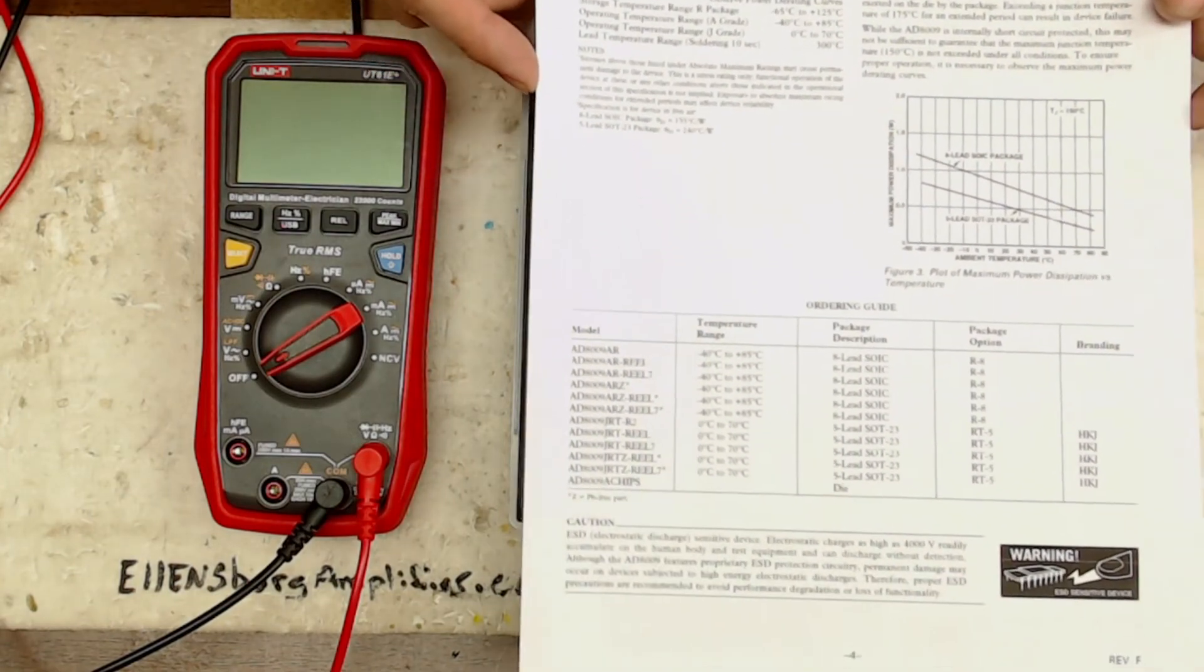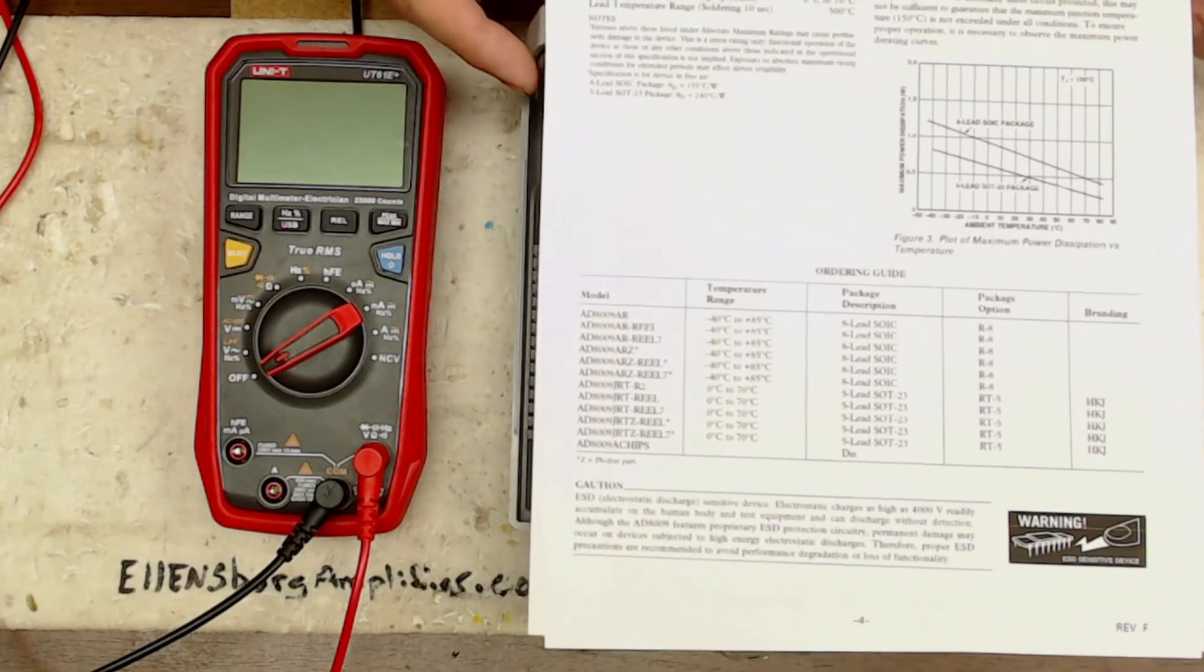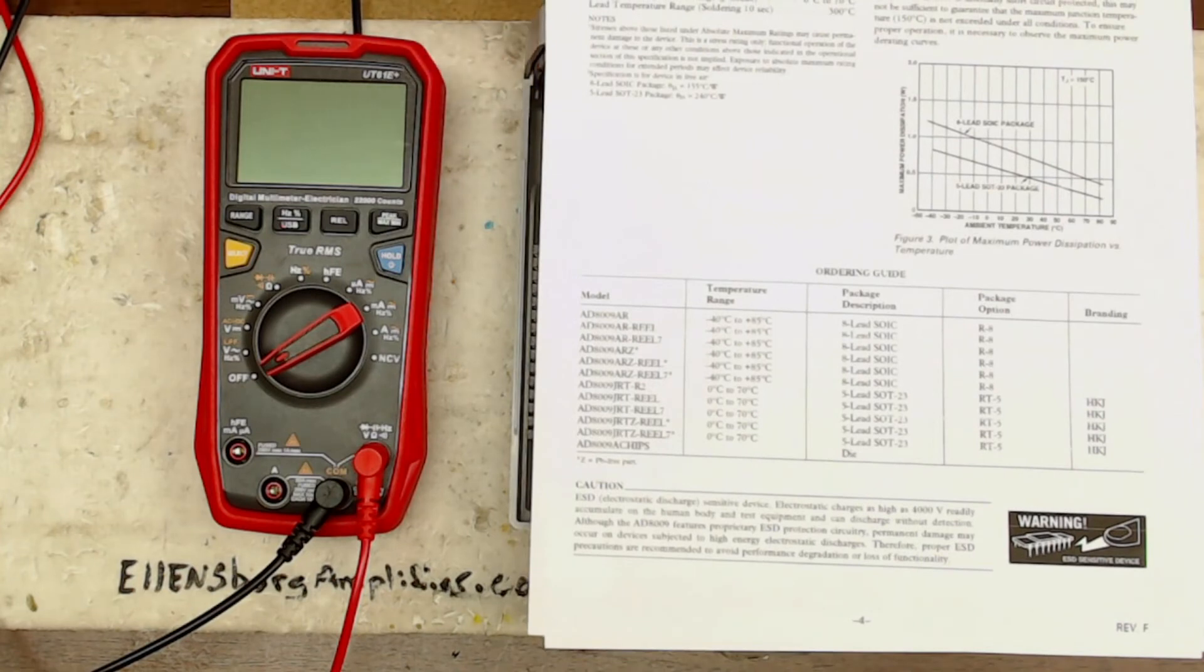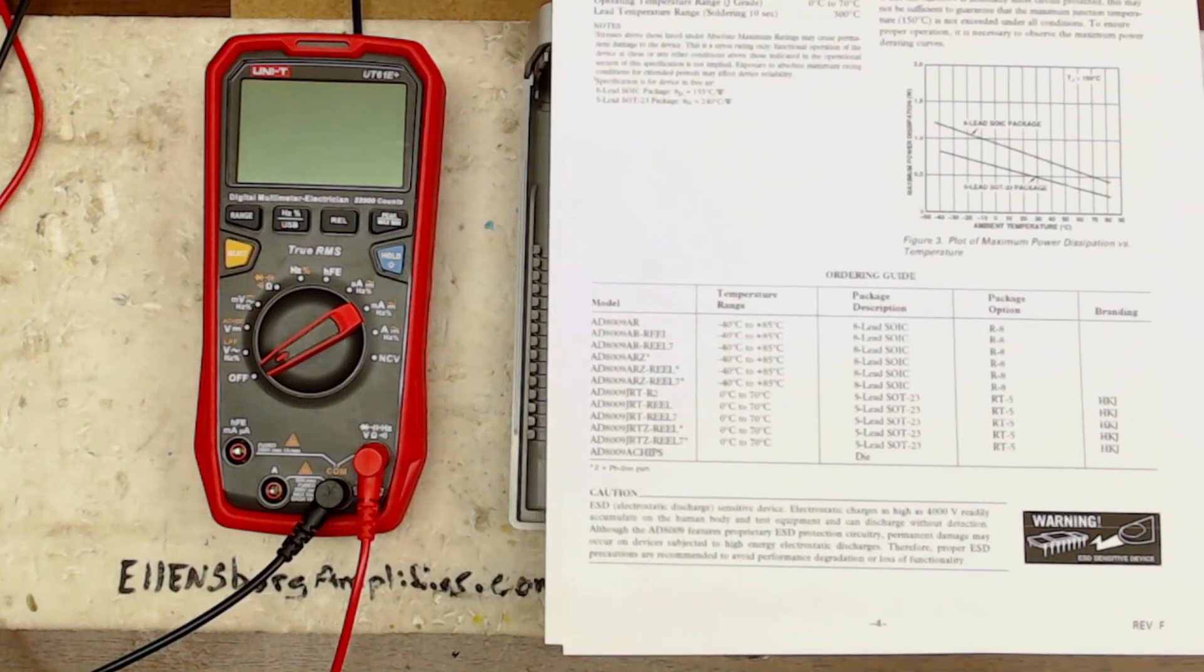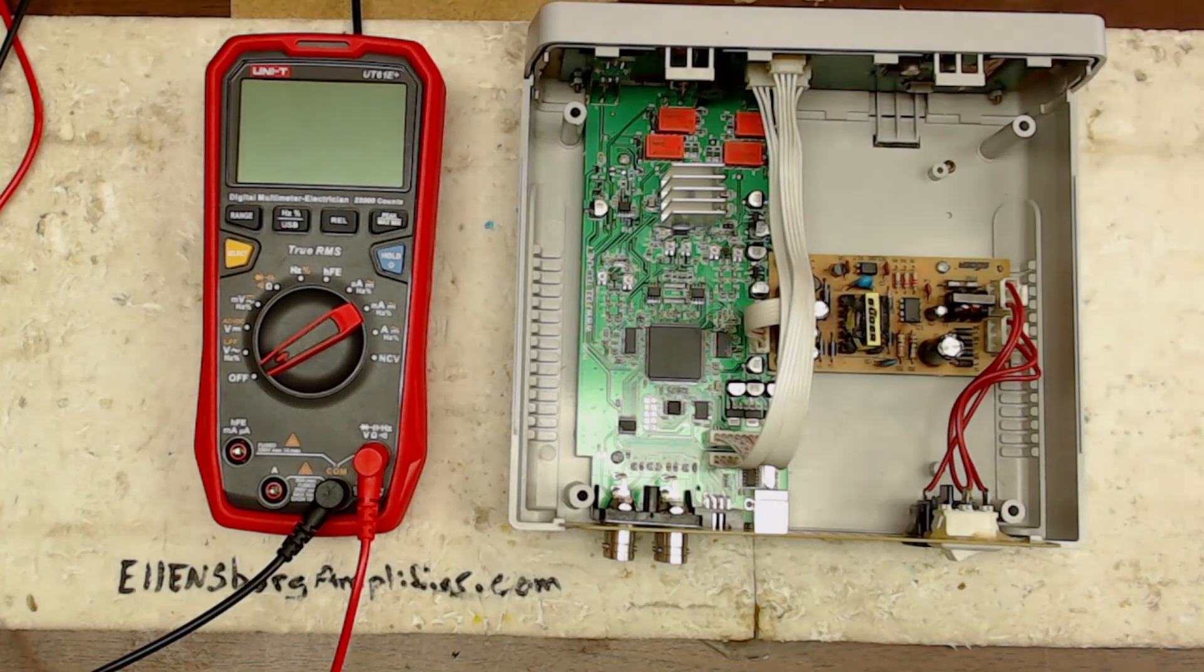Here's the branding, which I call identifiers. So this one here, branding, well there it is, HKJ. So then I knew I had found the right IC to repair this channel on this device here.